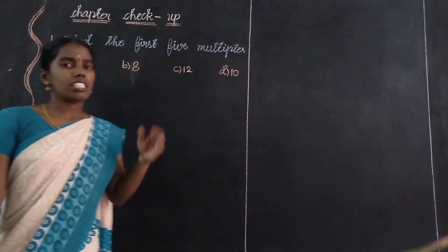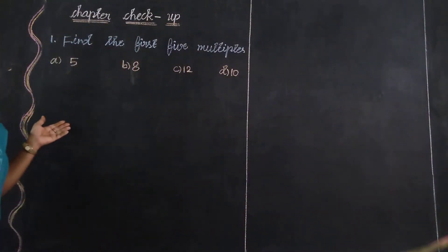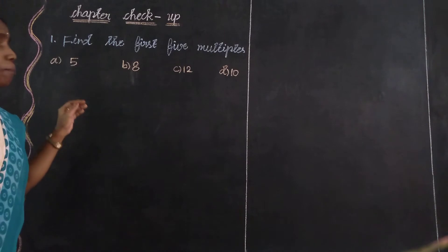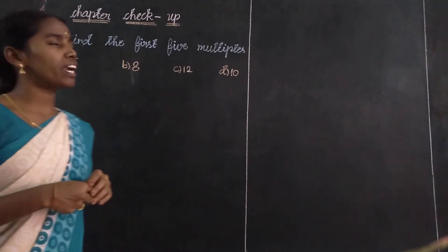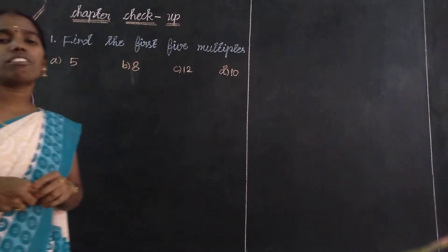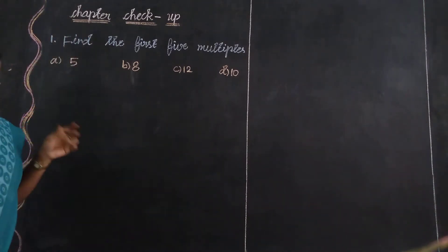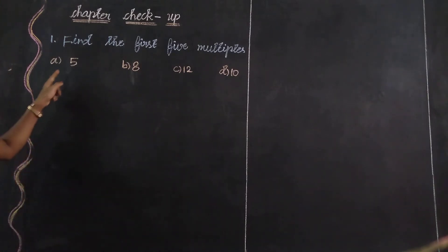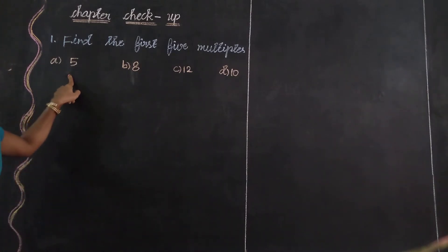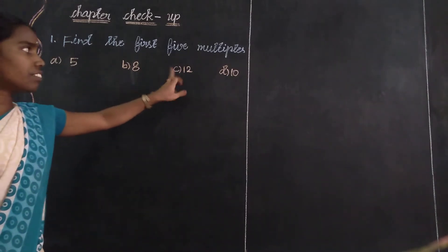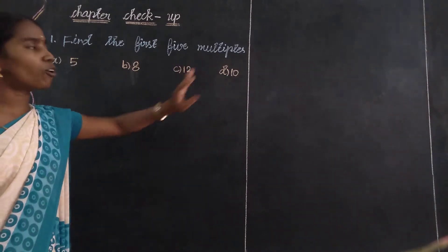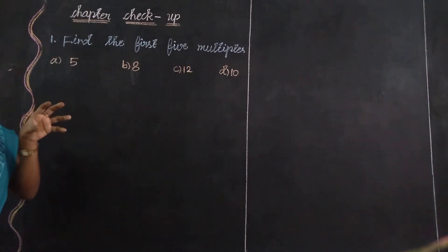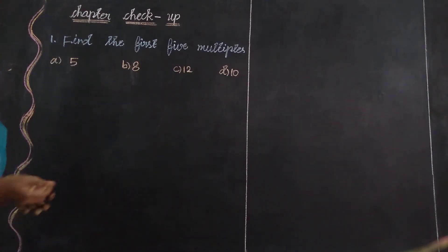Hello everyone. It's a chapter checkup, and then row 1 is a problem: find the first 5 multiples. The first number is 5, second number is 8, third one is 12, fourth one is 10. So in this number skill, that is the first 5 multiples.